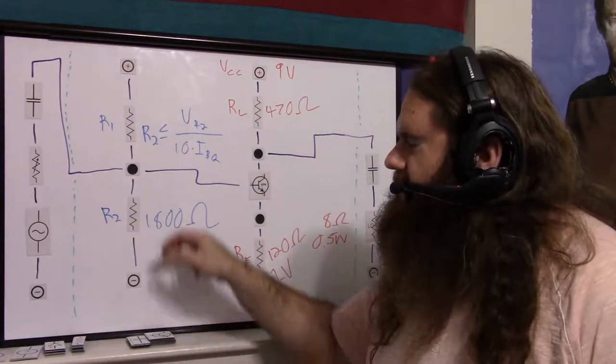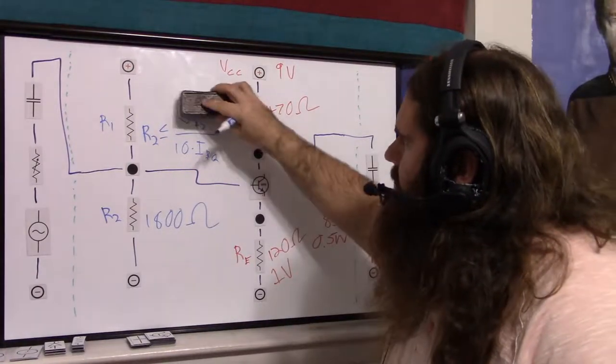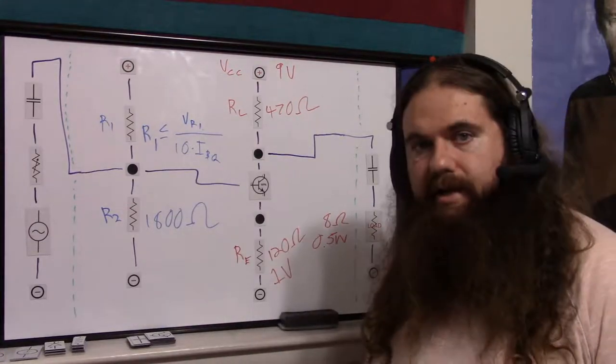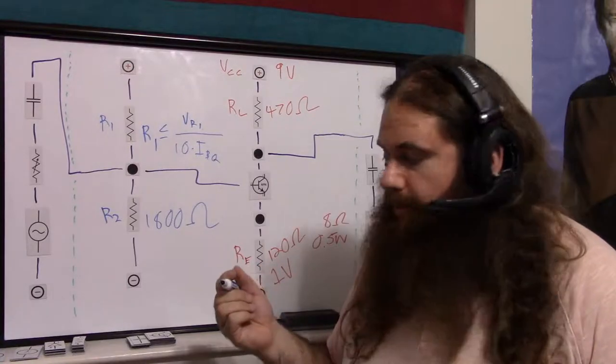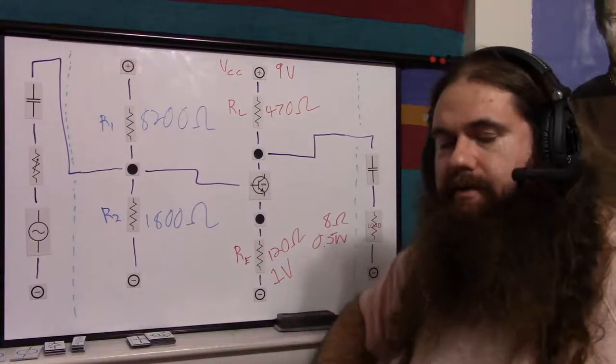So we get, for R1, say if we just change this to R1, because we want the same current through it. Then we get about 8577 ohms. Which, again, round down, because more is better, to about 8200 ohms. And that's actually it.